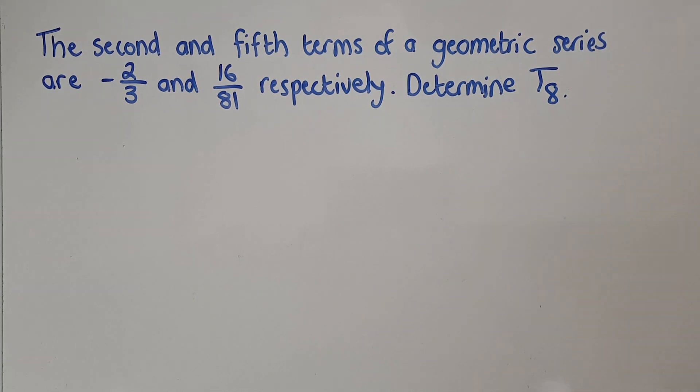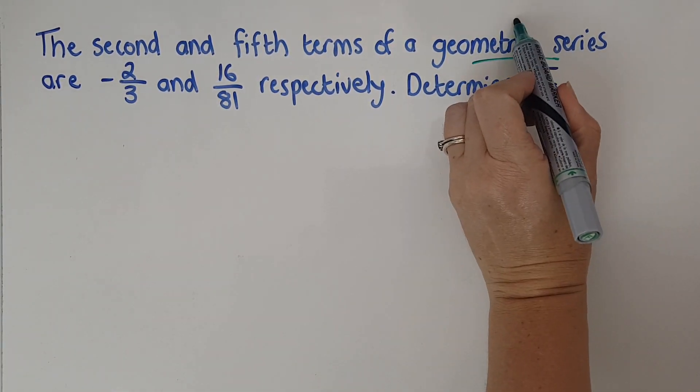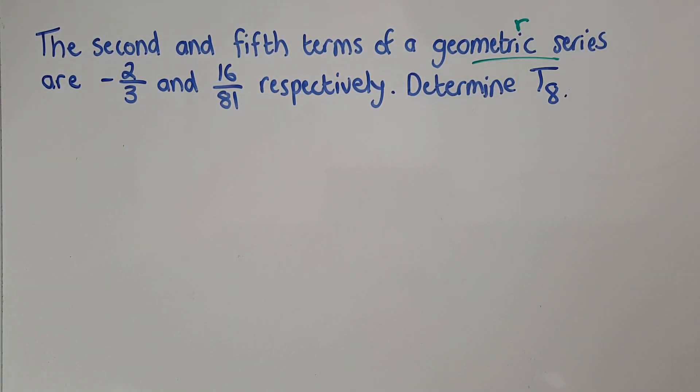The second and fifth terms of a geometric series, so we've clearly got an R that's constant, are negative two thirds and 16 over 81 respectively.